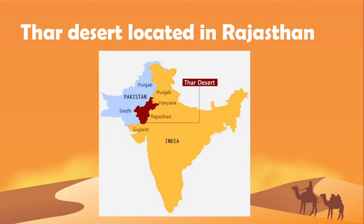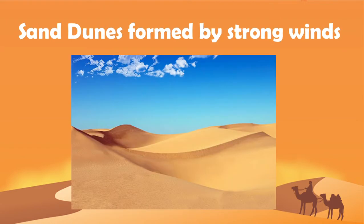The great Indian desert is extended to Haryana, Punjab and Gujarat. This area is covered with sand and without any vegetation. Rainfall is very little. The days are hot and the nights are cooler. The strong winds carry sand from one place to another, forming sand dunes.